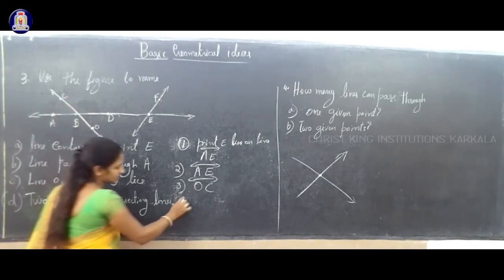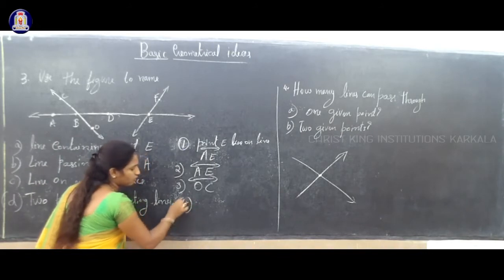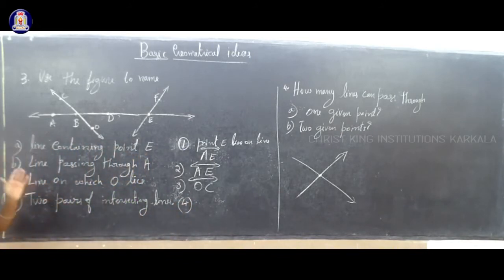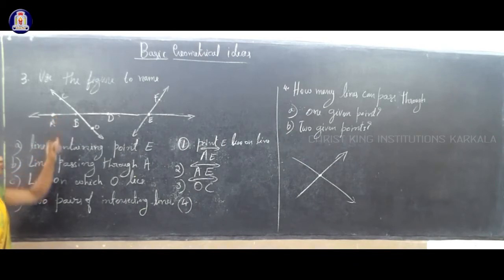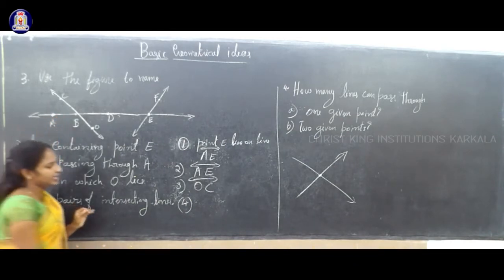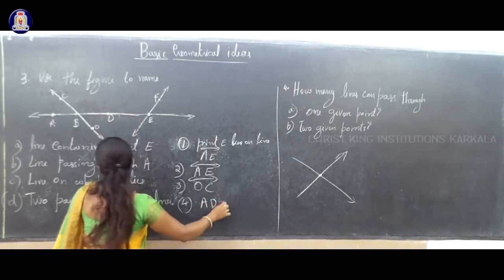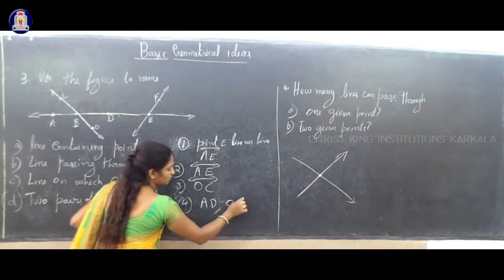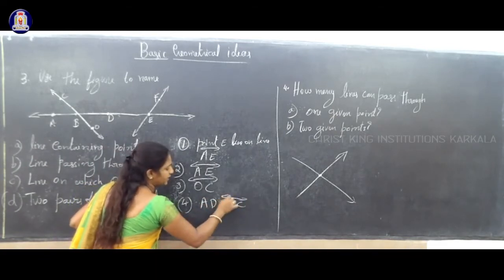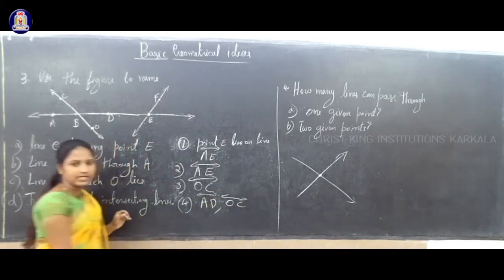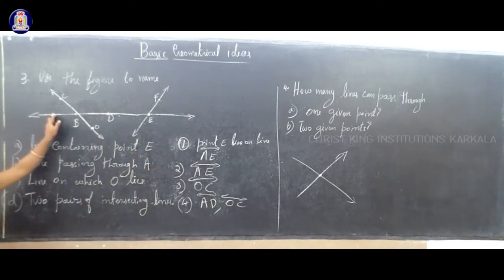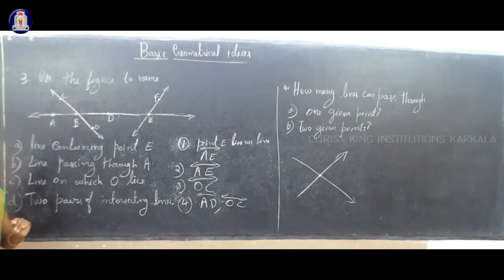The question is: write a pair of intersecting lines. In the figure, we can observe that there are two pairs of intersecting lines. One is AD — AD is intersecting OC. So AD and OC are intersecting lines.